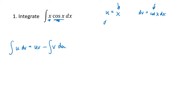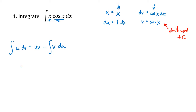I take the derivative of u to get du, which is going to be 1 dx, and I take the antiderivative of dv to get v — that's sine of x. We don't need the plus c here; even if we included it, it would end up canceling out in the end. Now we plug into our integration by parts formula.